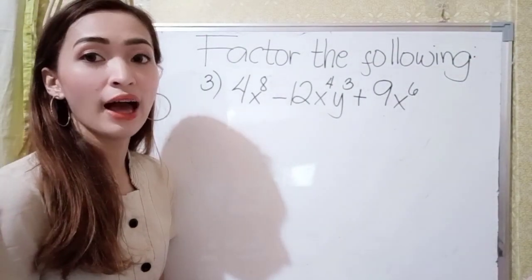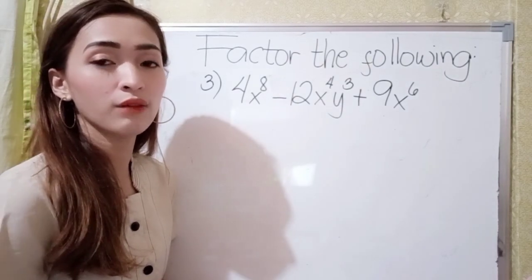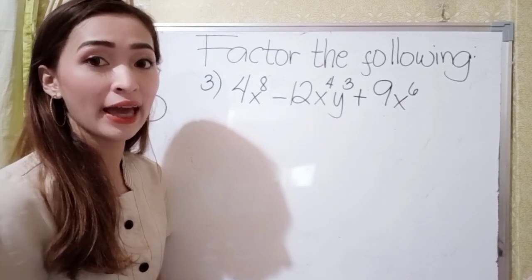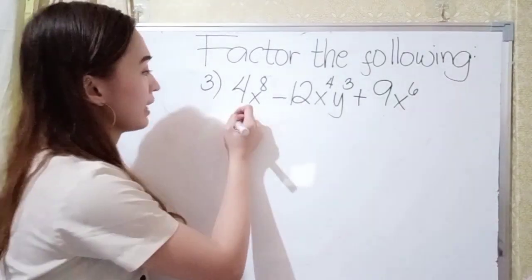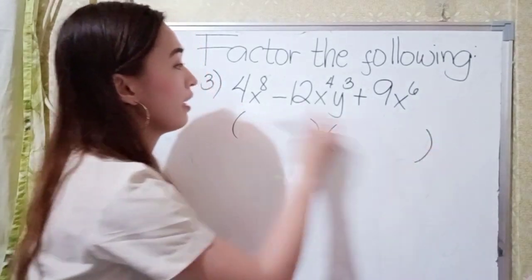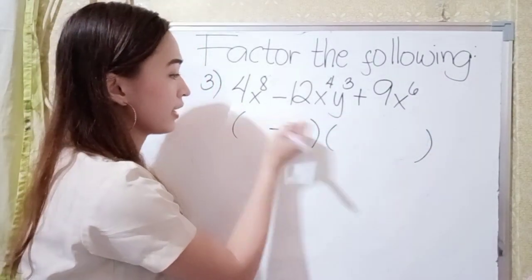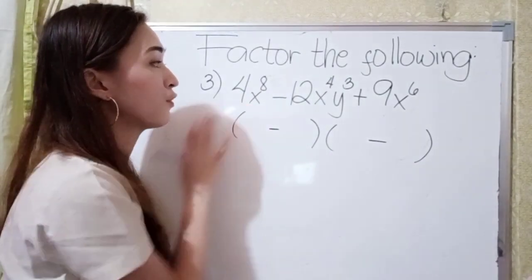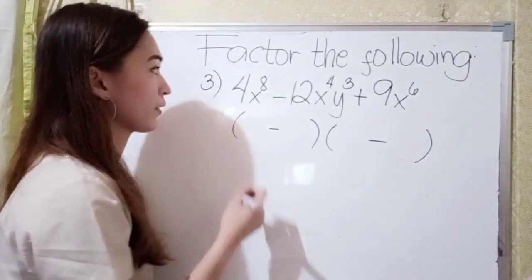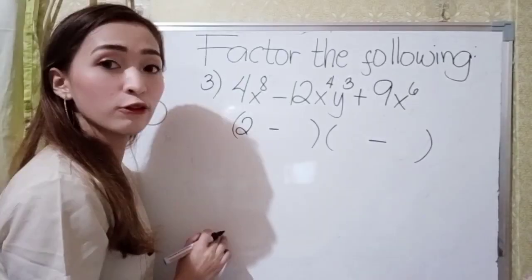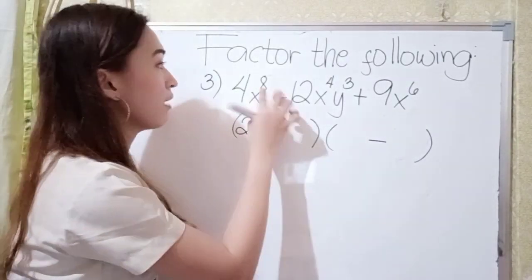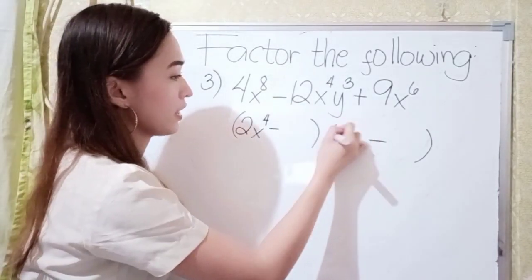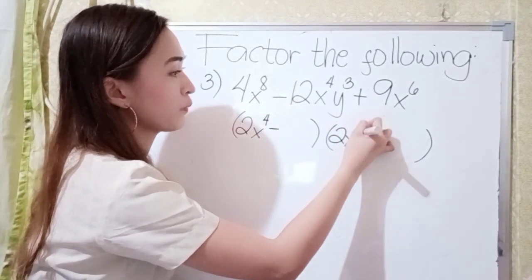For number 3, we have 4x raised to the 8th power minus 12x to the 4th power y cubed plus 9x to the 6th power. Again, let's have the grouping symbol. If this is negative, just write negative here and also here. Next, what is the square root of 4x to the 8th power? The square root of 4 is 2, so just write 2x. Now 8 divided by 2 is 4, so write 2x raised to the 4th power.